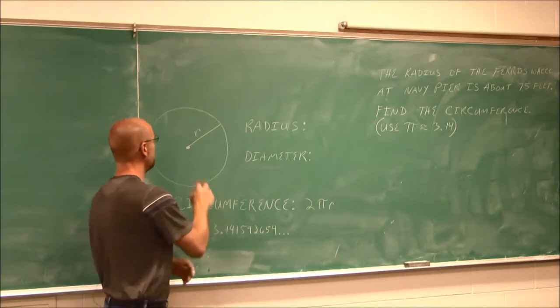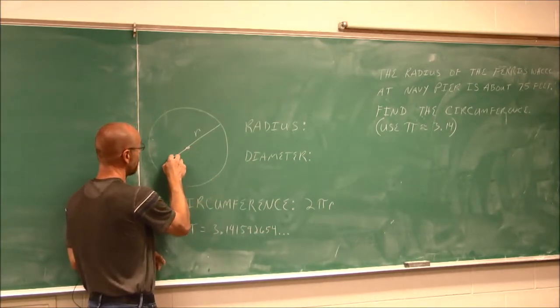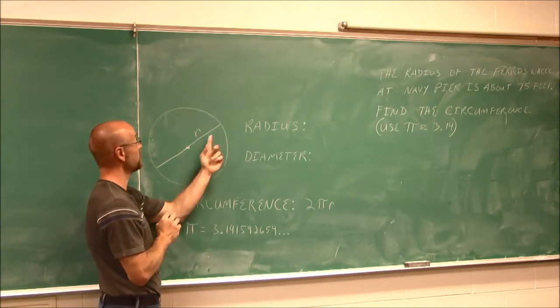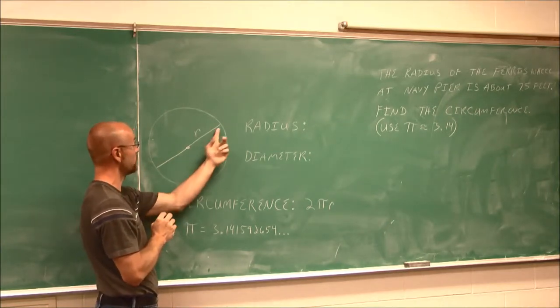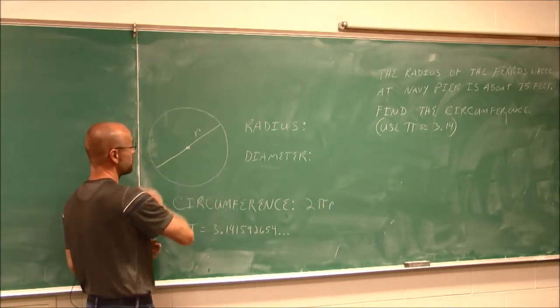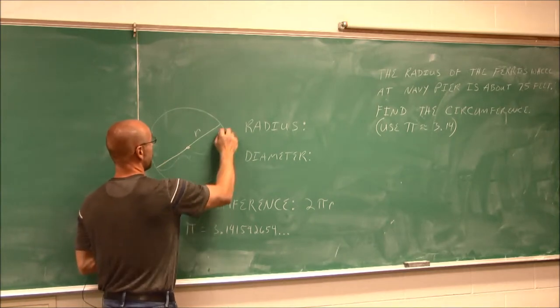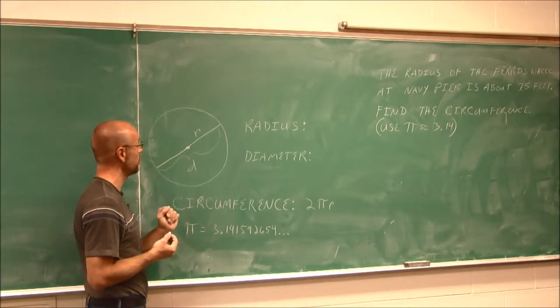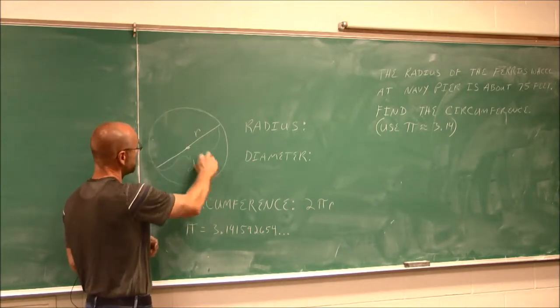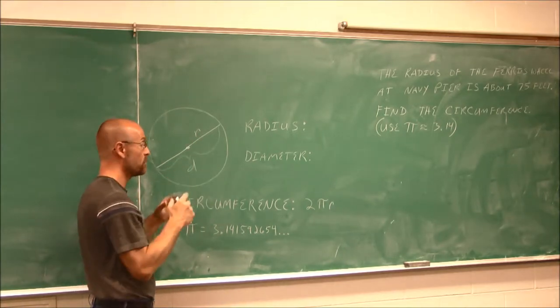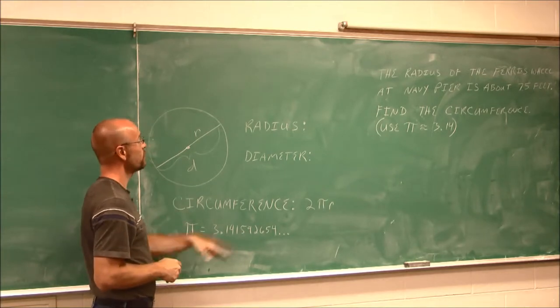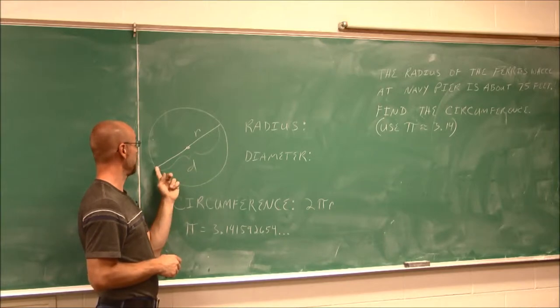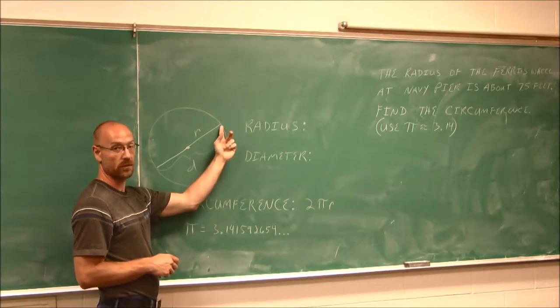The diameter is defined as the distance across a circle, and you have to pass through the center. It's the widest point of the circle. So I could measure it this way and I'd get some value that is the diameter, and we usually use a lowercase d to denote that. Or if I measured it this way, I'd get the same distance because it should be a perfect circle. So radius is the distance from the center to the edge, and diameter is defined as the distance across a circle.